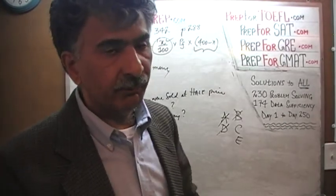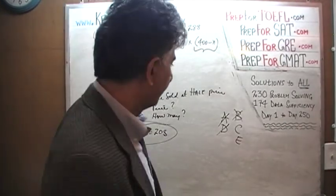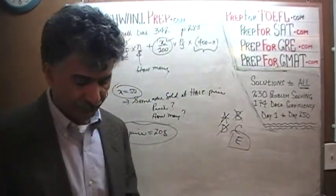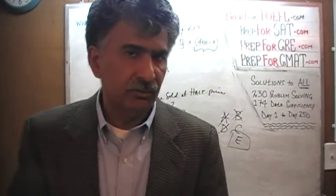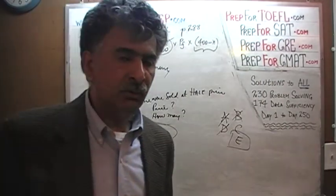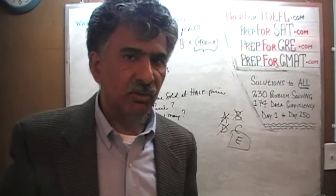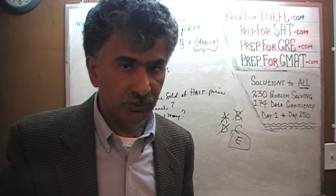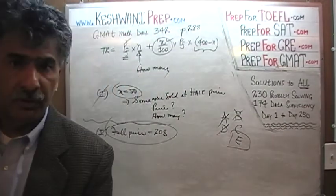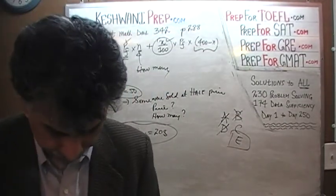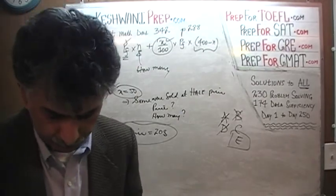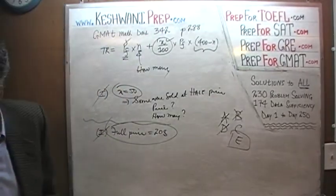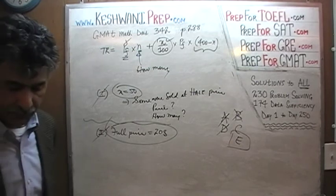We need three bits of information and we only have two. The answer is E. We need to know the full price, the rate of discount, and how many were sold either at full price or at a discount. We do not have the third bit of information. Putting the two statements together still does not get us anywhere. Number 148.